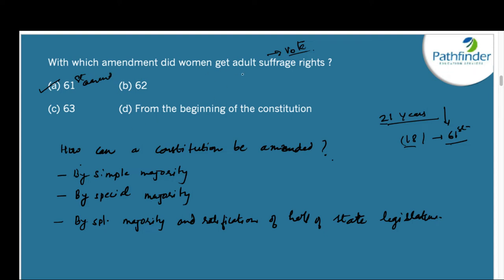But when did women get the right to vote from the beginning of the Constitution? Please understand the difference between these two questions. India is one of the few countries where women have had the right to vote since the first day. But when did women have the right to vote at the age of 18? It was with the 61st Amendment. Even men also had the right to vote at age 18 only with the 61st Amendment.